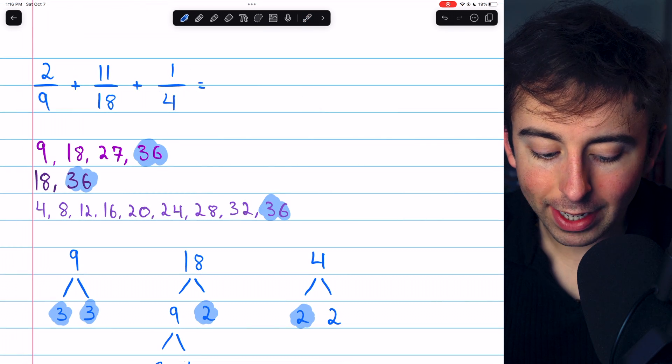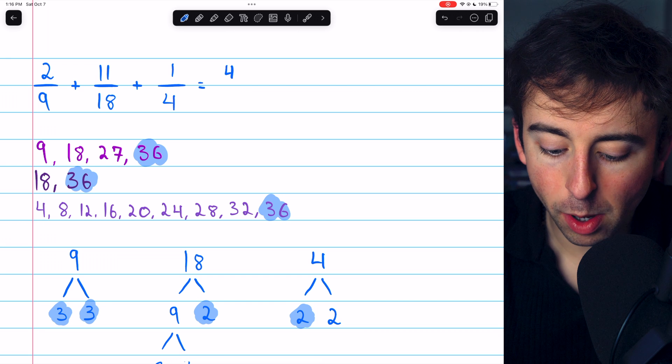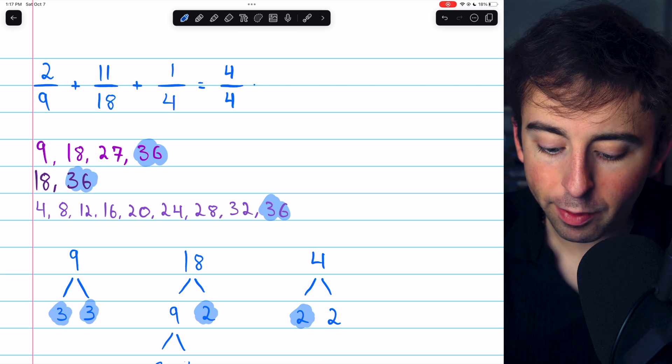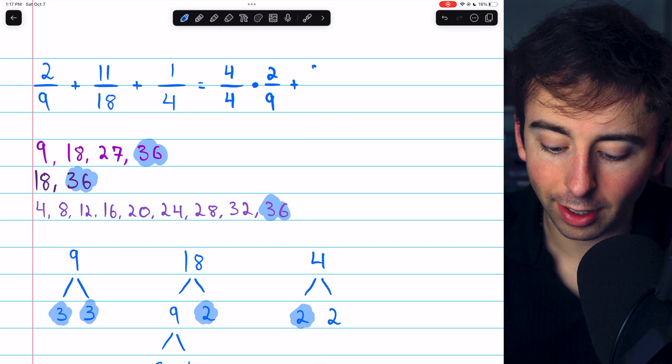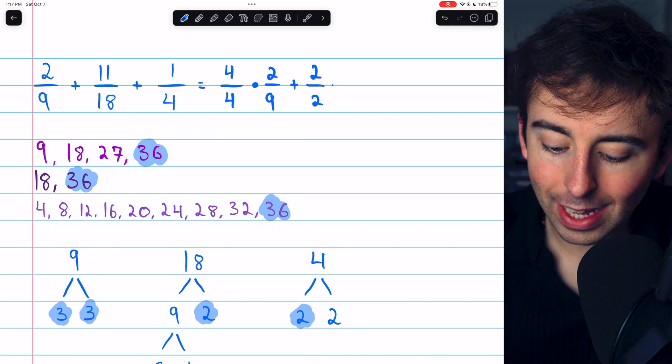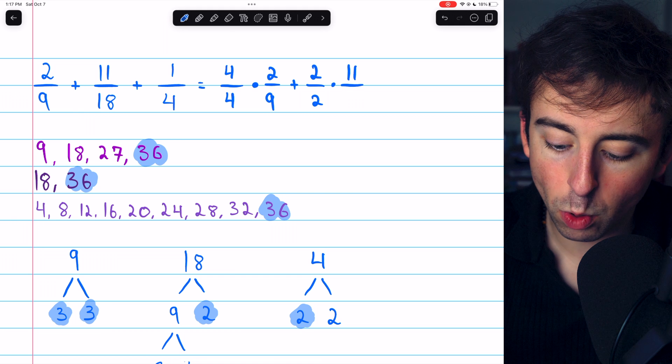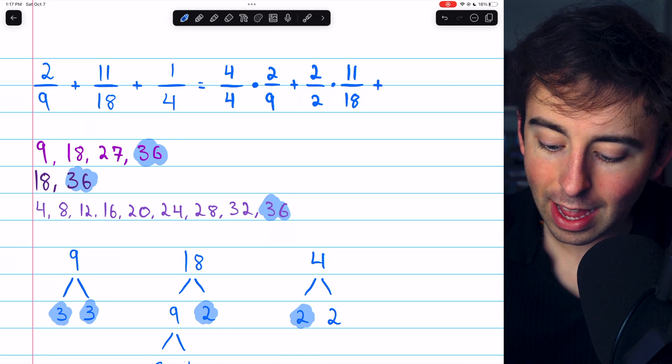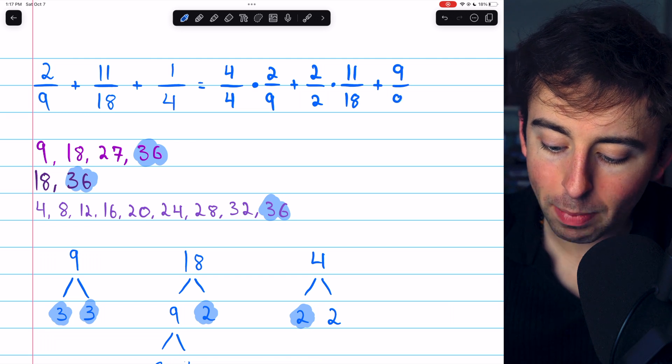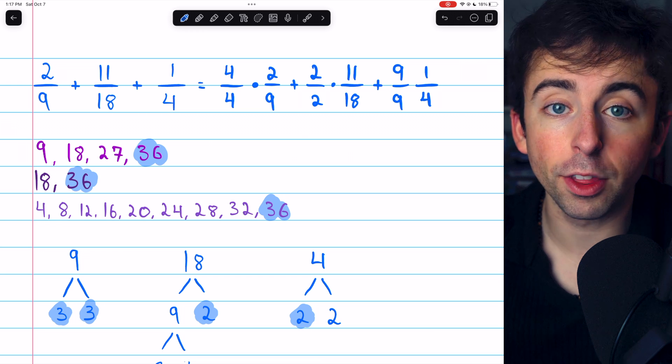So let's go ahead and start rewriting these fractions. We'll have to multiply 2 over 9 by 4 over 4 in order to change its denominator to 36. And we'll have to multiply 1 over 4 by 9 over 9 in order to change its denominator to 36.